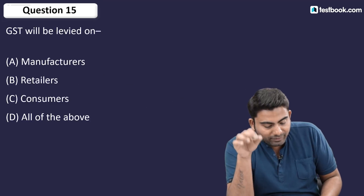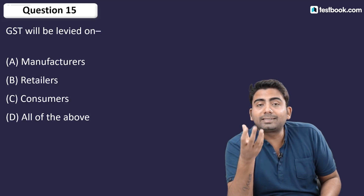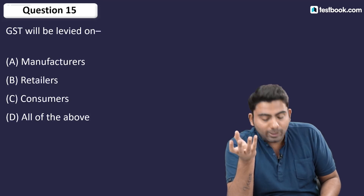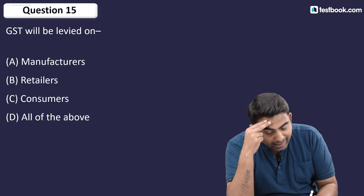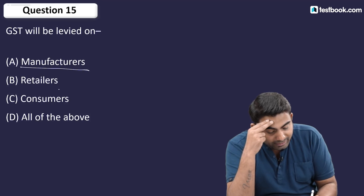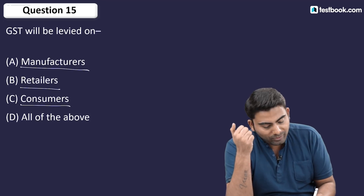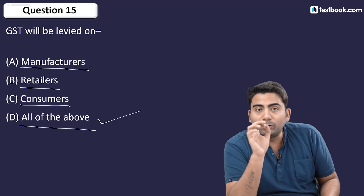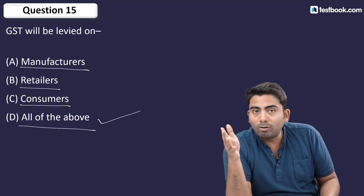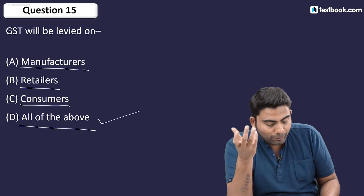Question number 15: GST will be levied on whom? Options include manufacturer, retailers, and consumer. Since it applies at every stage, the answer is all of the above. This was explained in part 3 of the second video.